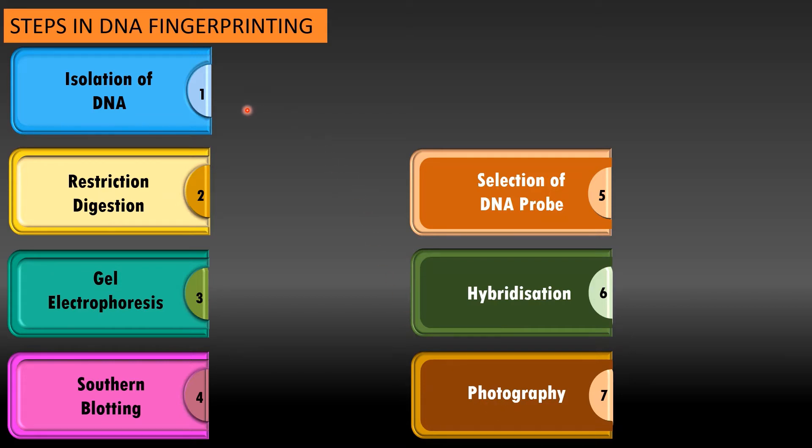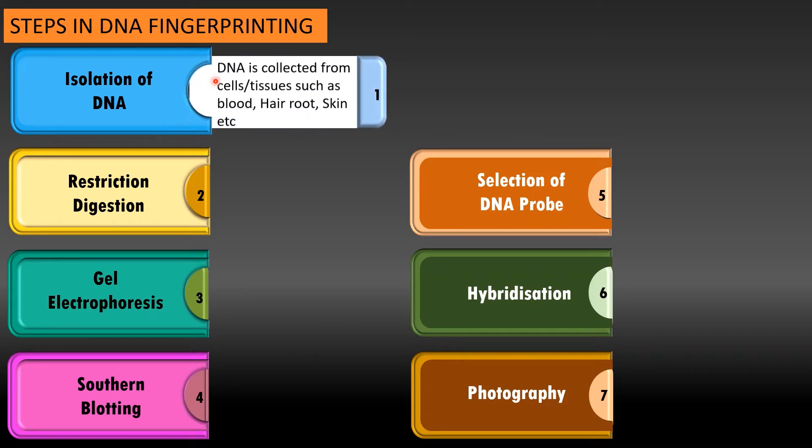Now we will see one by one what are the meanings of these steps. In isolation of DNA, we collect the DNA samples from cells or tissues such as blood, hair roots, skin or saliva.